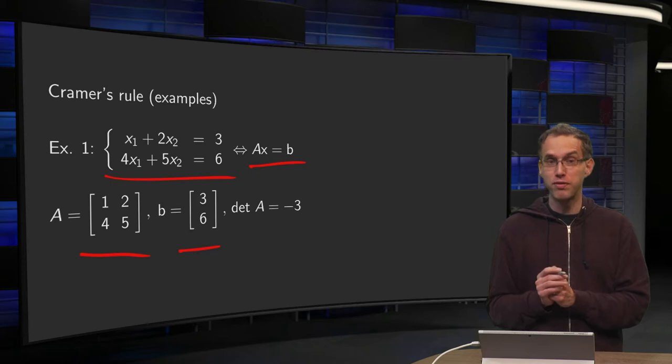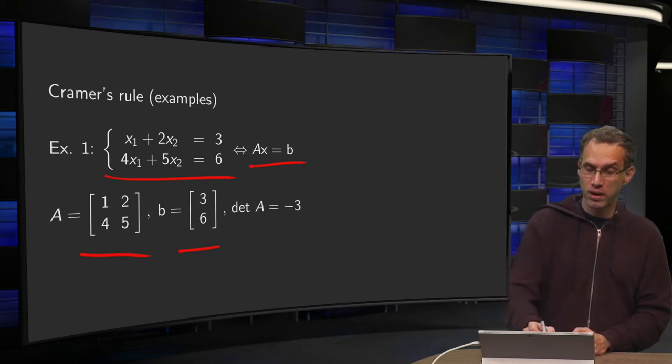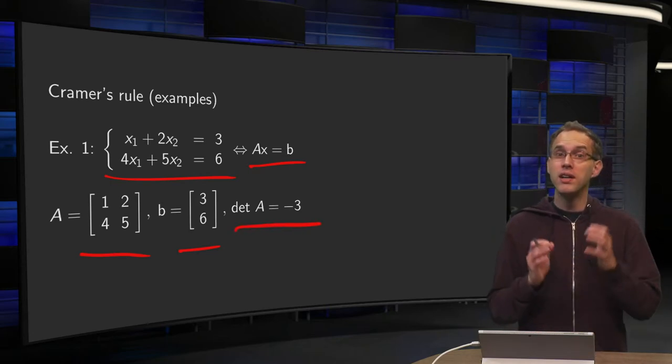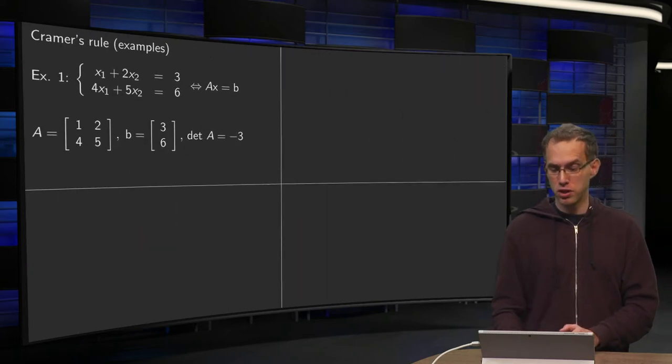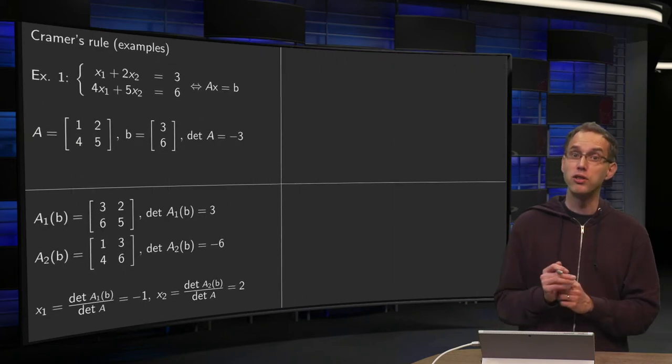Well our determinant of A equals 1 times 5 minus 2 times 4 equals minus 3. So that's the determinant of A. So this system will have a unique solution. So how does it work?